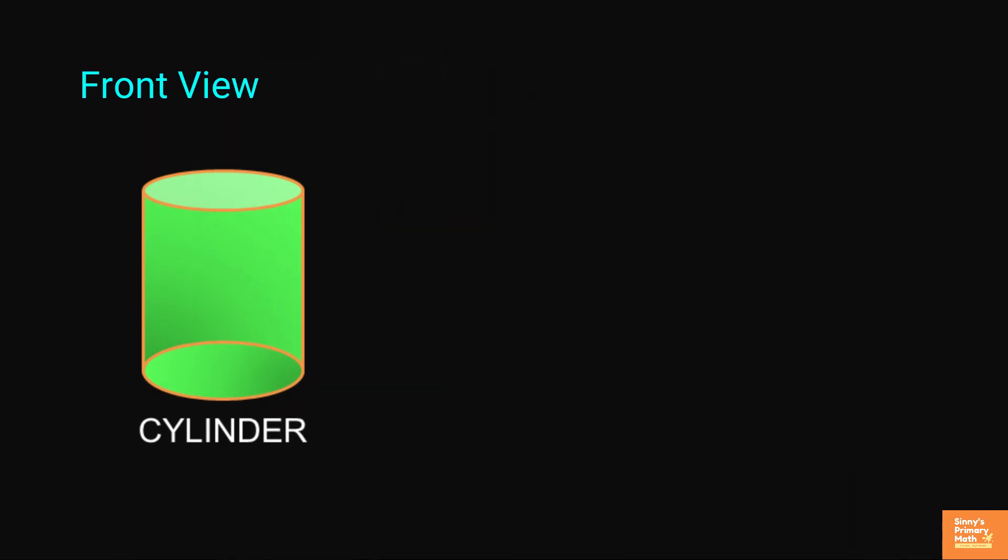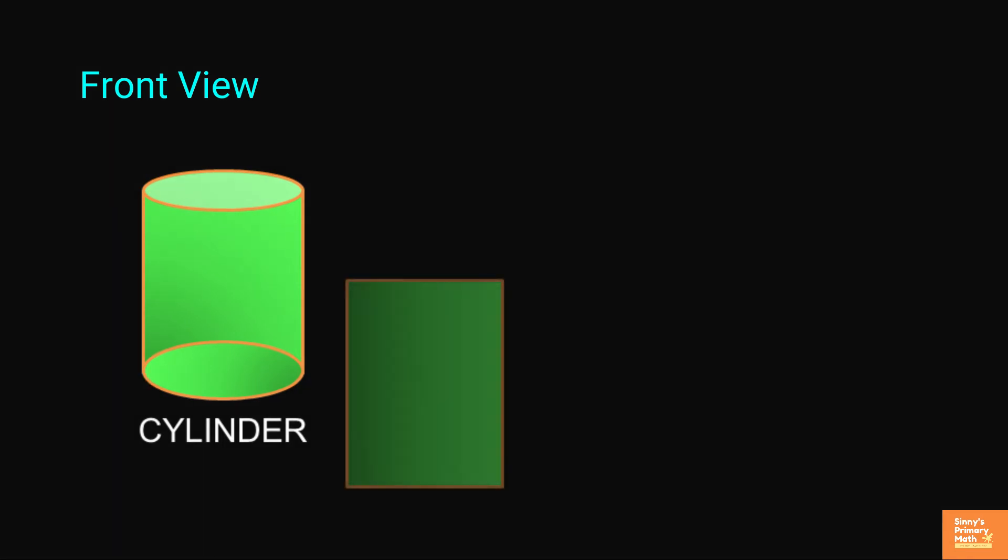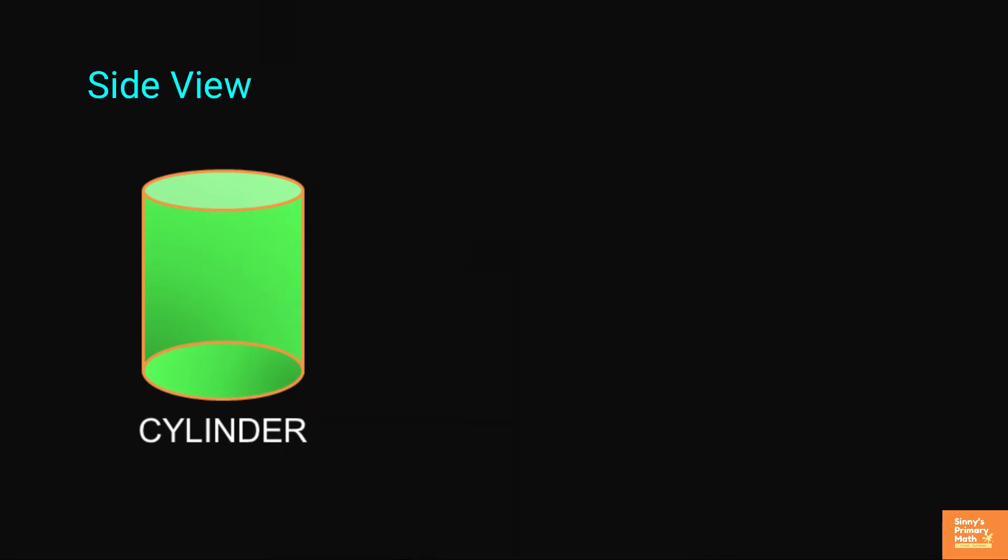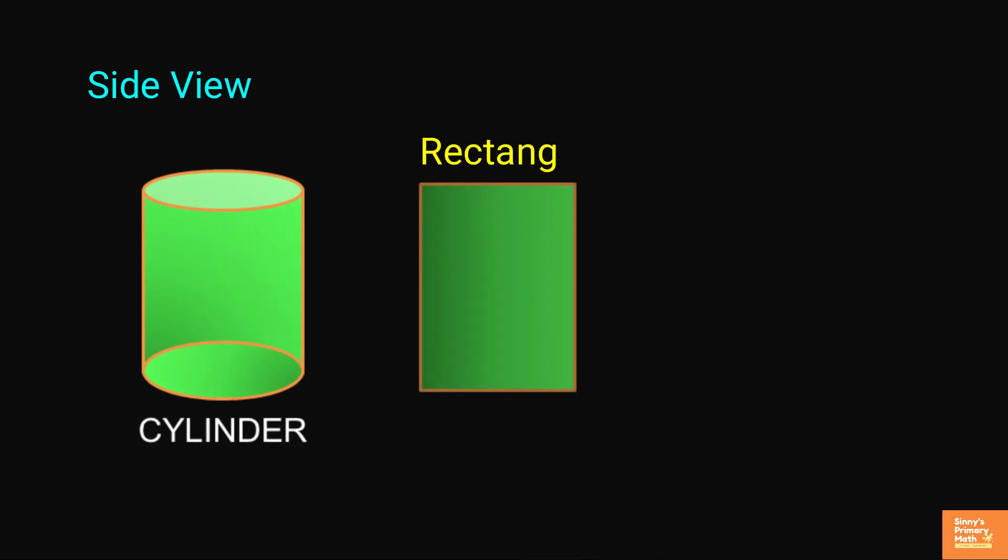Front view: when we see the cylinder from the front view, then it looks like a rectangle. Side view: when we see the cylinder from the side view, then it looks like a rectangle.